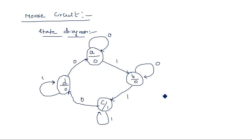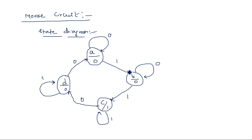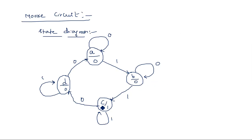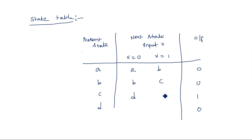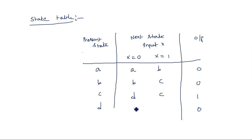So this is the state diagram and state table for both the Mealy and Moore circuits. The state table can be drawn from the state diagram and vice versa — they are dependent on each other. In the next video, I will explain how to simplify the state tables for Mealy and Moore circuits. Thank you.